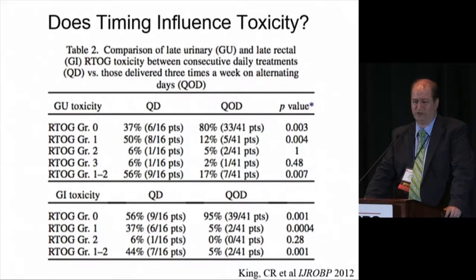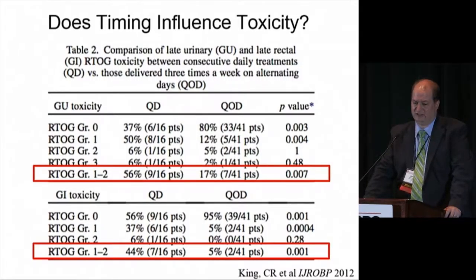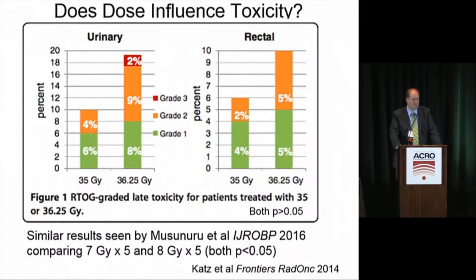Does timing influence toxicity? Chris King at Stanford ran one of the first CyberKnife studies and examined this. Initially planned as five fractions in one week, they observed more acute toxicity than anticipated, so they lengthened the schedule to every other day — two to three fractions per week. Retrospective comparison showed greater late GU and GI toxicity in those given single daily fractions versus treatment over two weeks, though improving technique over time may also account for some difference.